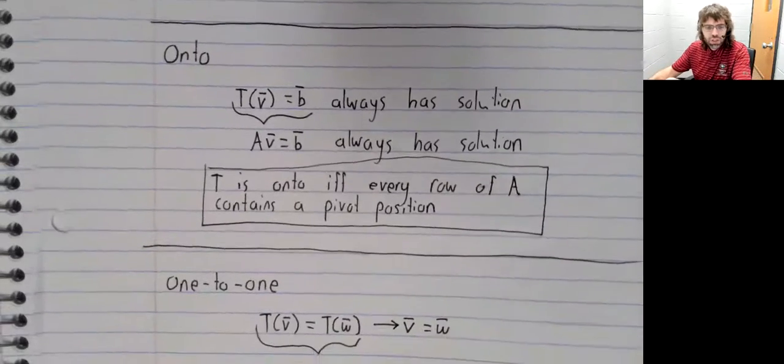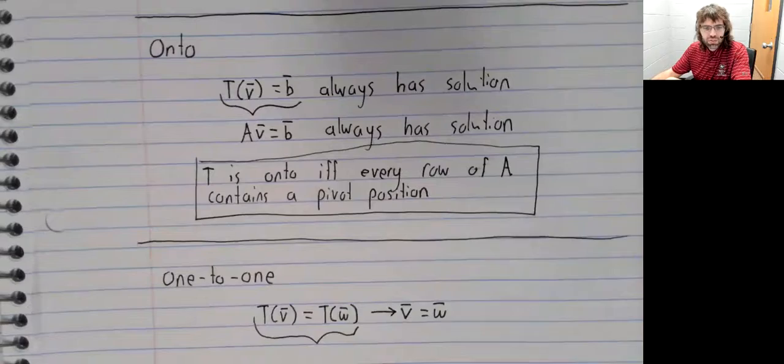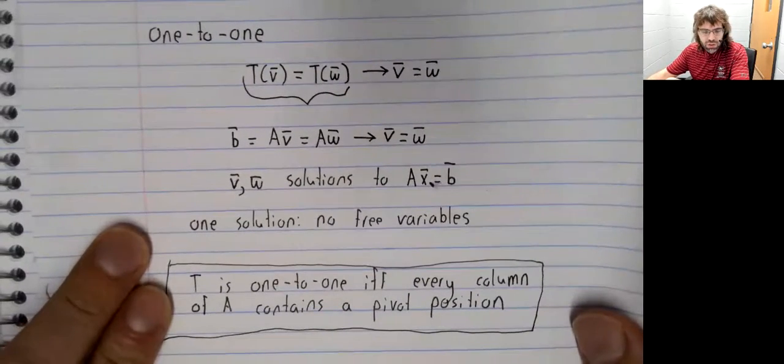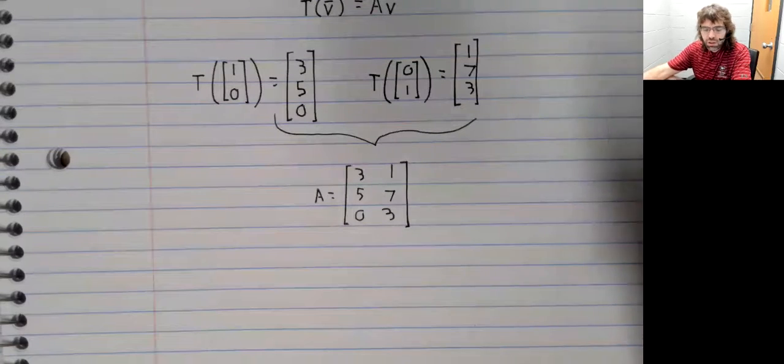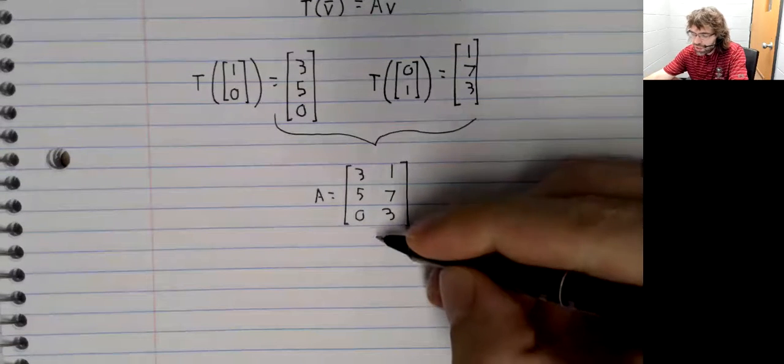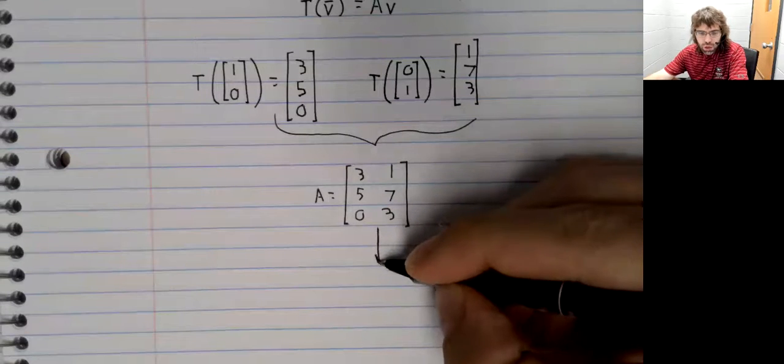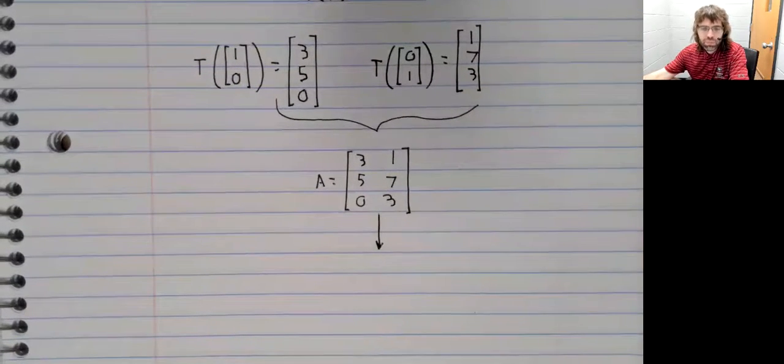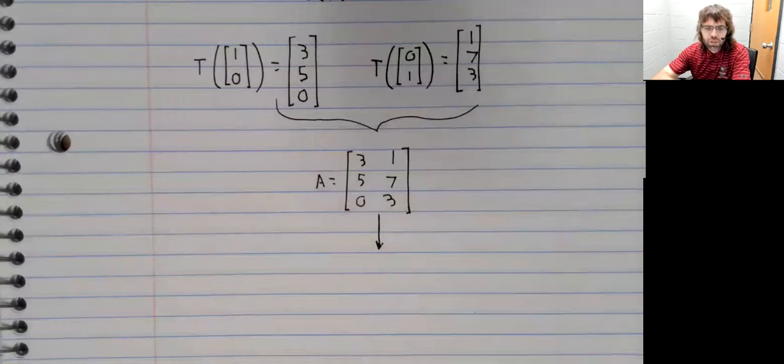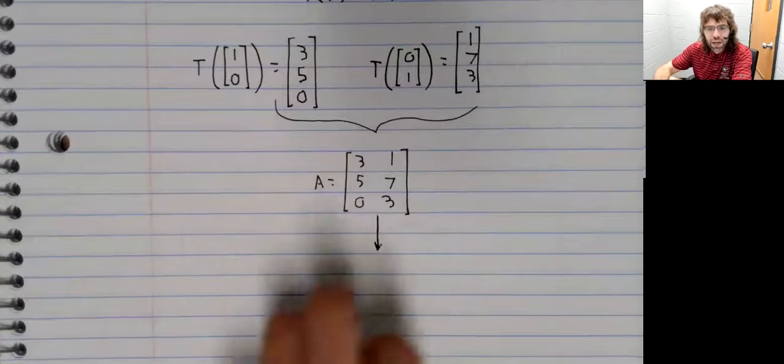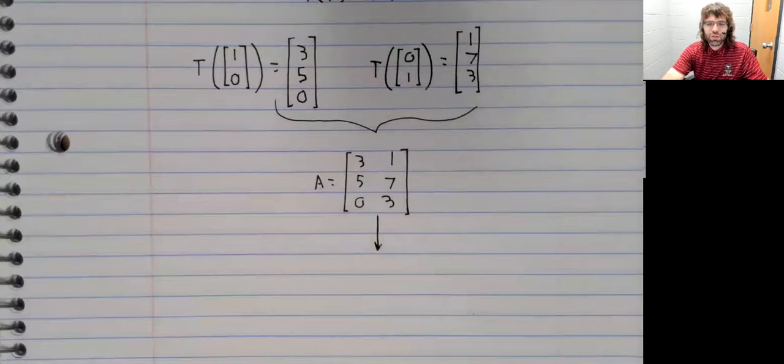And both of these theorems involve pivot positions. So let's put this matrix into row echelon or reduced row echelon form so that we can see what its pivot positions are. Why don't you actually try doing this on your calculator. Wait a moment.